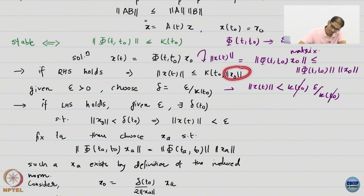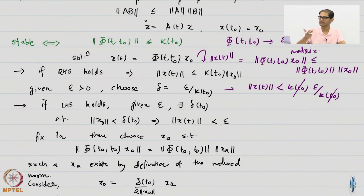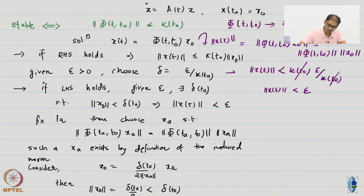x0 is strictly less than delta, therefore this is not a less-than-or-equal-to but a strictly less-than. Just keep track of these. We like to work with open balls or open sets. The set {norm x(T) < epsilon} is an open set, whereas {norm x(T) ≤ epsilon} is a closed set.